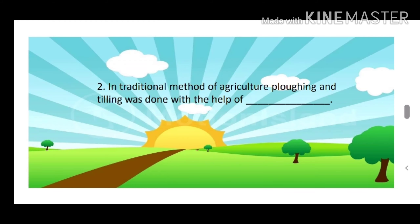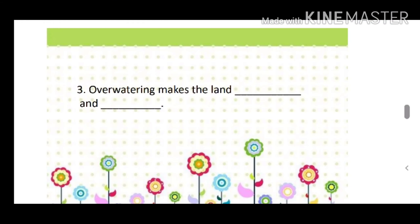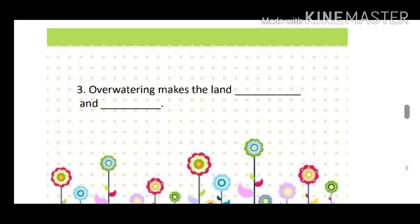Second: in the traditional method of agriculture, ploughing and tilling was done with the help of dash. Third: overwatering makes the land dash and dash.